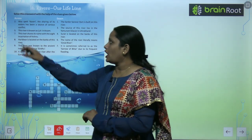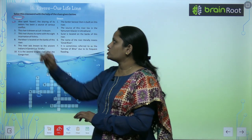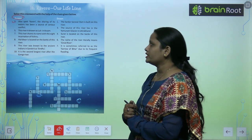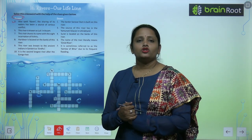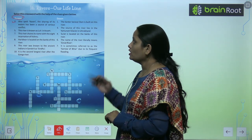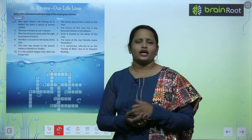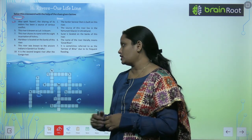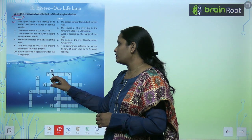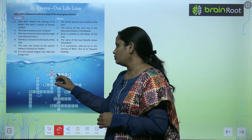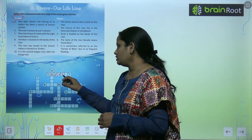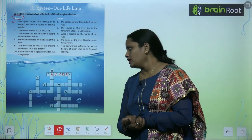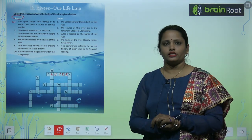Let's move on to the across column. This river is also spelt Kaveri. The sharing of this water has been a source of serious conflict. So this river is also known as Kaveri, and sharing it has led to conflict. The name of this river is Cauvery — C-A-U-V-E-R-Y. This is now called Kaveri.